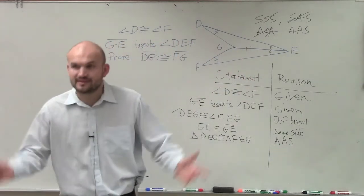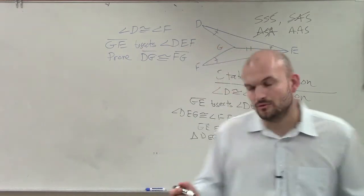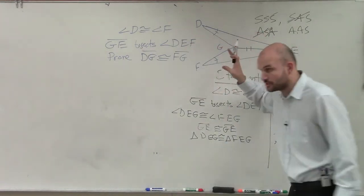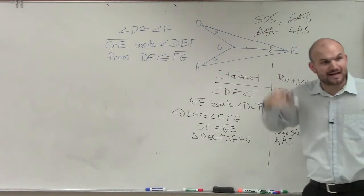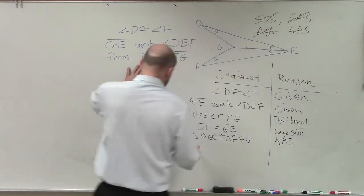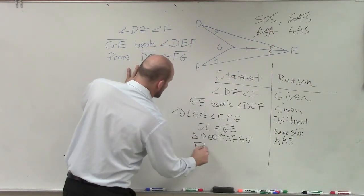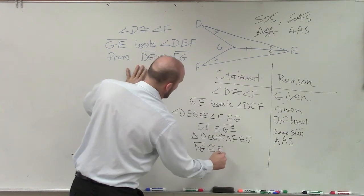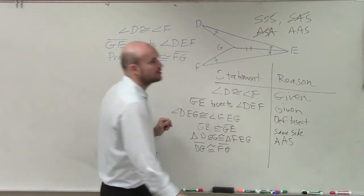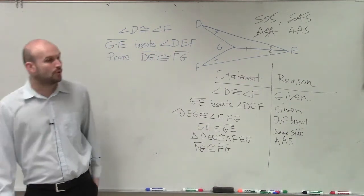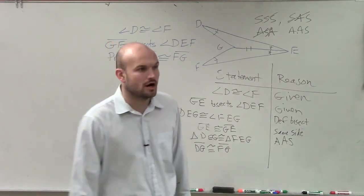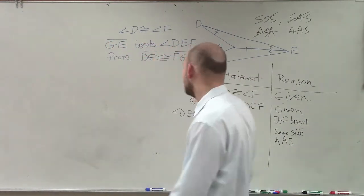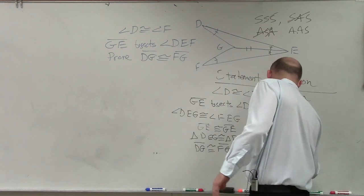But we're not trying to prove that the triangles are congruent. We're trying to prove that these two sides are congruent. So you have to go to the extra step. Now we can say that line DG is congruent to line FG. Because corresponding parts of congruent triangles are congruent. All right? But I'm just going to leave this as congruent triangles.